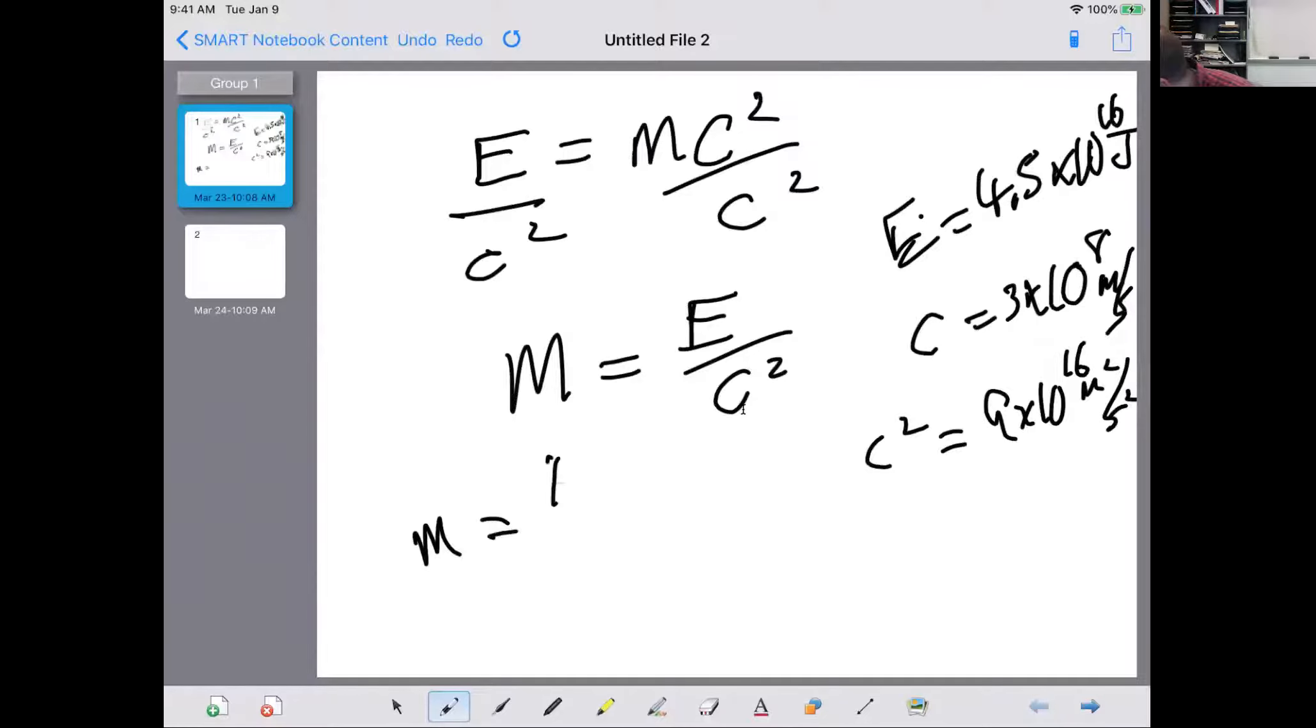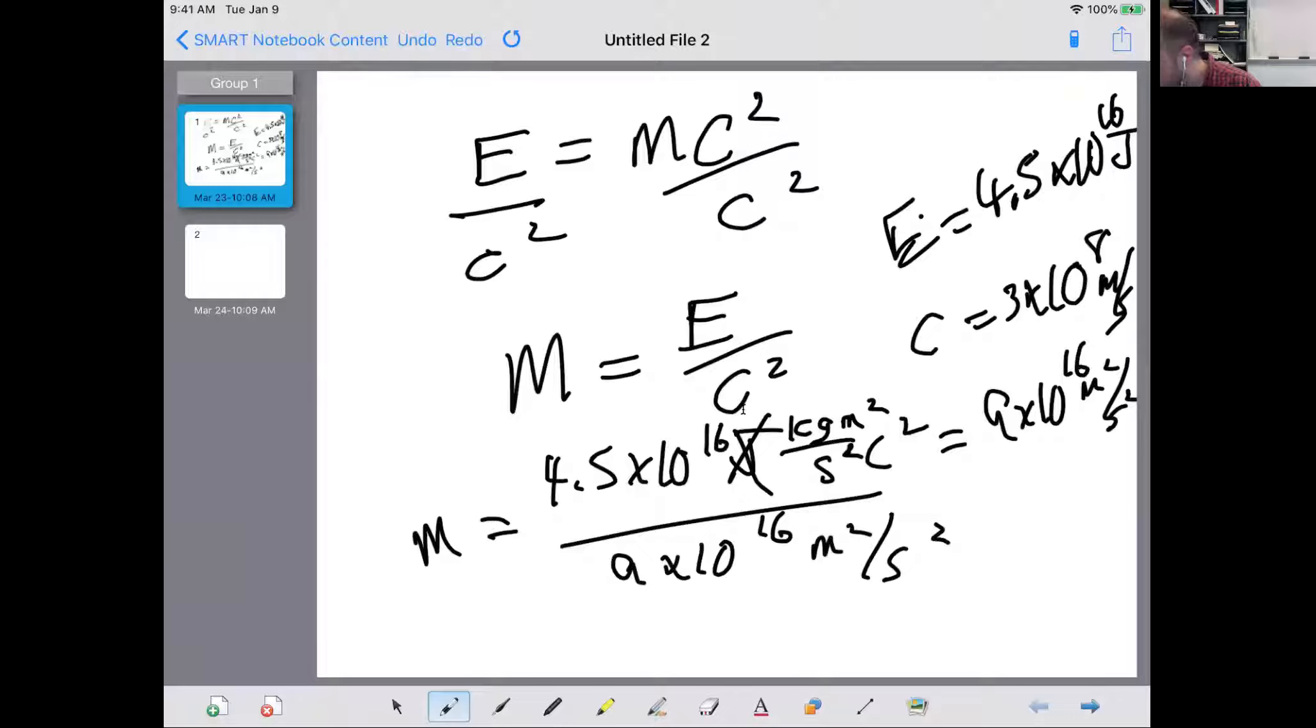M equals E, 4.5 times 10 to the 16 joules, or kilograms times meters squared per second squared, divided by C squared, which is 9 times 10 to the 16 meters squared per second squared. Look at that. The numbers worked out pretty nicely. M equals, so 10 to the 16 goes away. 4.5 divided by 9 is exactly a half. Meters squared per second squares cancel on the top and bottom. I just have kilograms. And the answer is a half a kilogram.